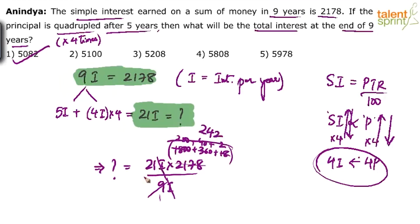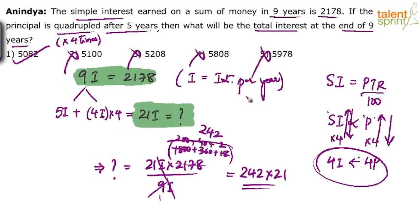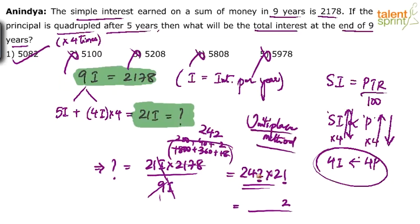So the calculation becomes 242 multiplied by 21. Without doing the full calculation, I can immediately say options 2, 3, 4, and 5 are wrong using the unit digit method. One number ends in 2 and the other ends in 1, so their product must end in 2. Option 2 ends in 0, options 3, 4, and 5 end in 8 — none end in 2, so all are wrong. Option 1 is the only choice, hence that's the answer.